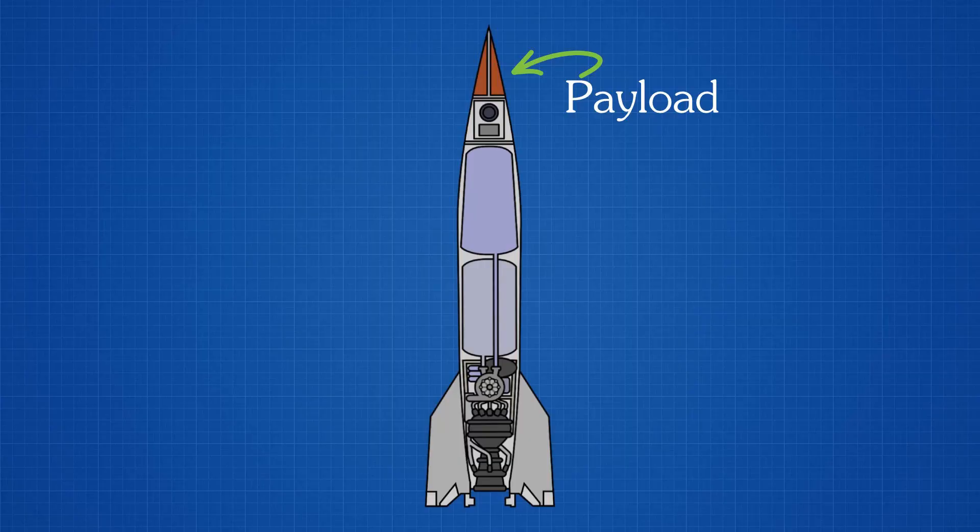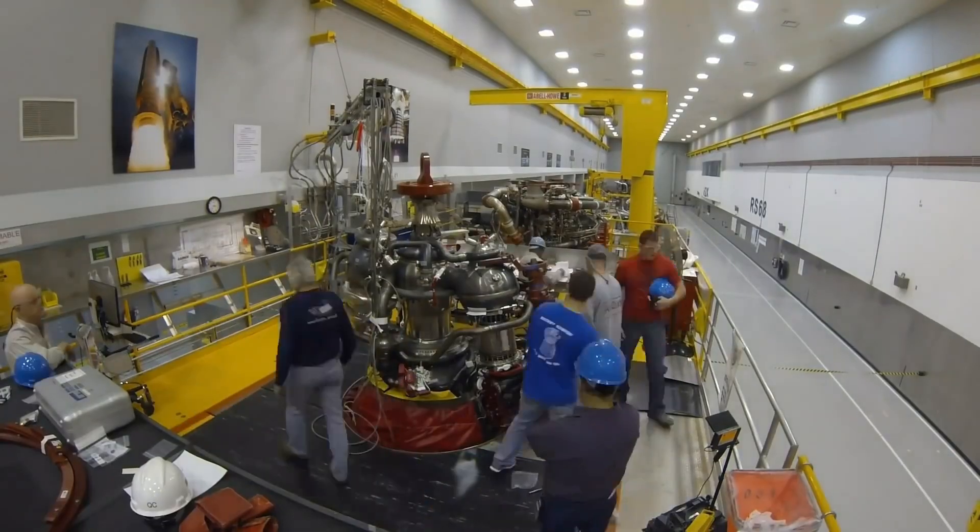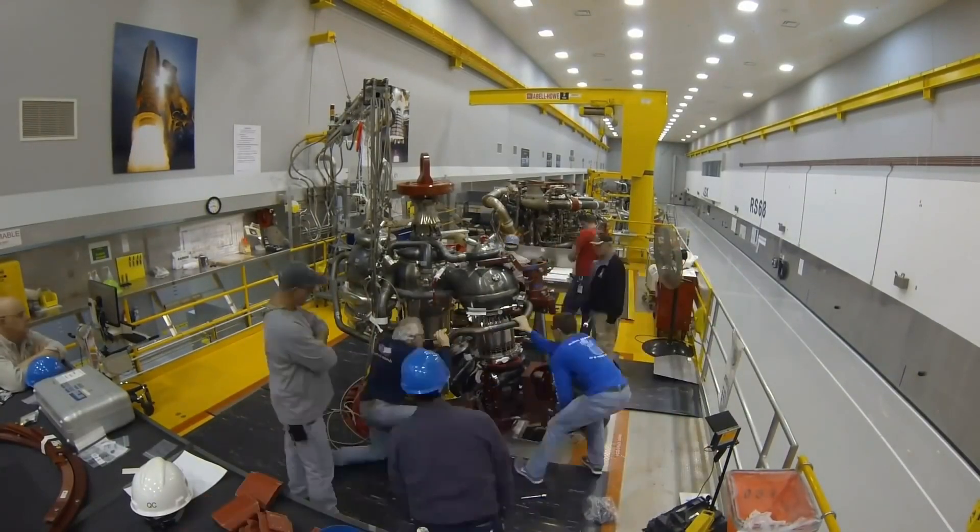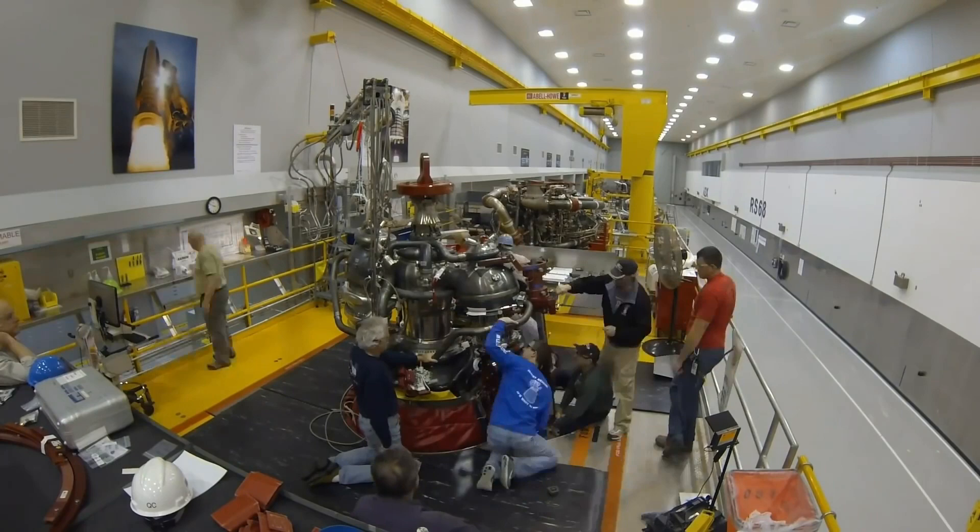Moving on, the final system of the rocket is the topmost part, the payload. A payload is anything that we want to send to space. It can be a satellite or even astronauts.